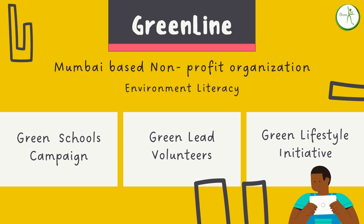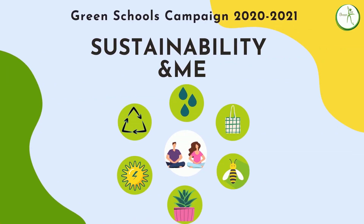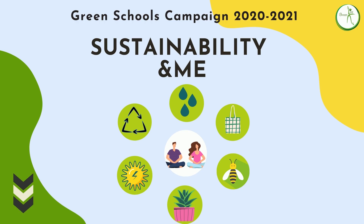This particular video falls under the Green Schools campaign. Every year, Team GreenLine tackles an environmental issue under this campaign. Last year, it was about sustainability and me, where we learnt how the climate affects us and the food we eat. It also affects the biodiversity which in turn impacts the food we produce, thereby affecting humans. If you haven't watched last year's sessions, the links are provided in the description box below. Do check them out.